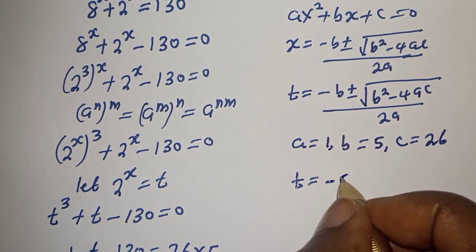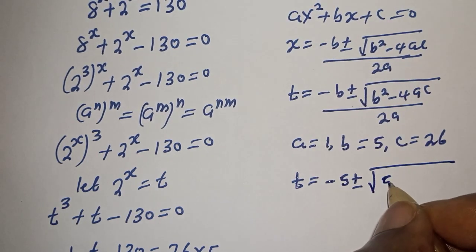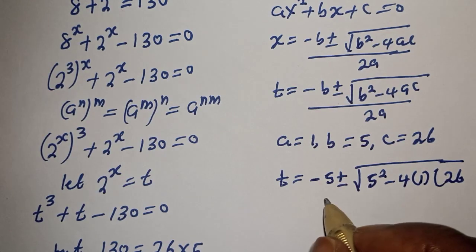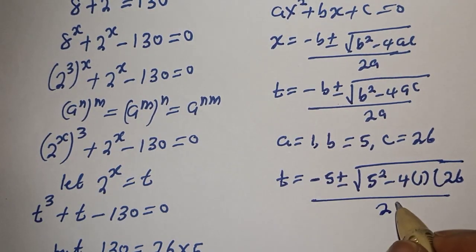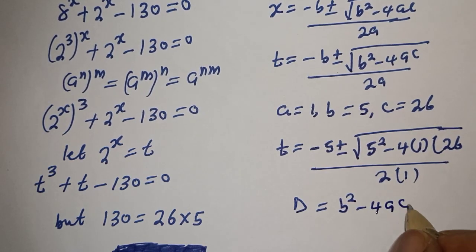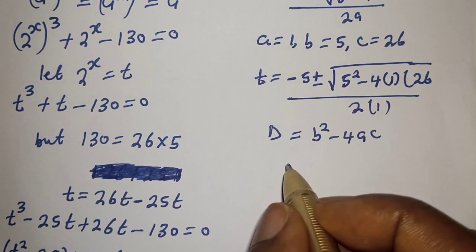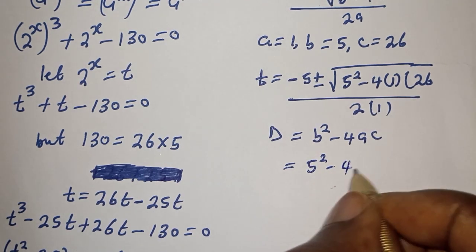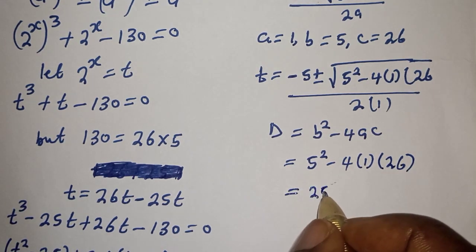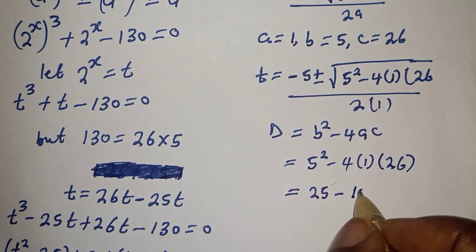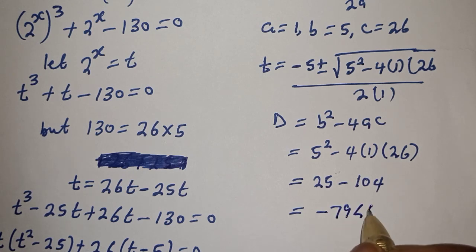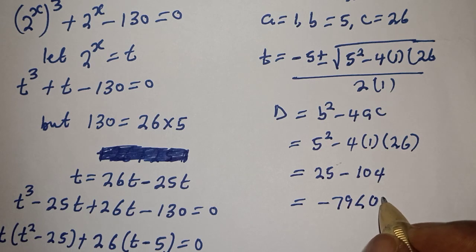So t equals minus 5 plus or minus square root of 5 squared minus 4 times 1 times 26, over 2 times 1. The discriminant d equals b squared minus 4ac equals 5 squared minus 4 times 1 times 26. That is 25 minus 104 equals minus 79, which is less than 0. So there is no real solution here — this case is rejected.